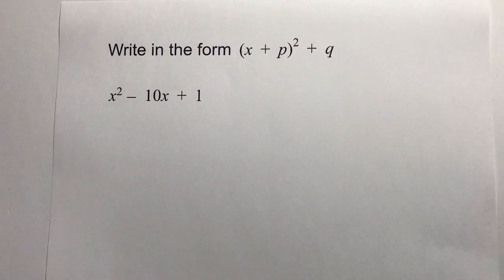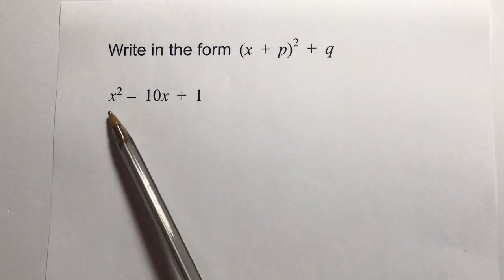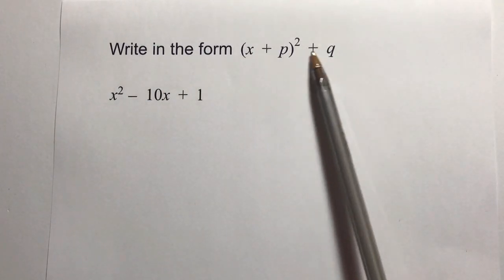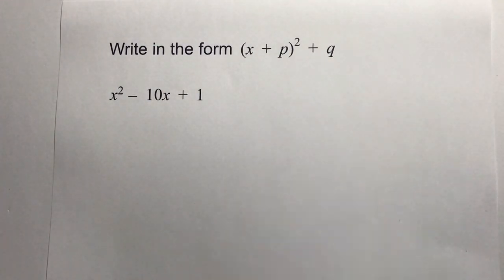Hi, in this video we're going to be looking at a topic called completing the square. It will typically give you a question like this: write this equation x² - 10x + 1 in the form (x + p)² + q, which really means that we're not going to be changing any of the values of the equation.